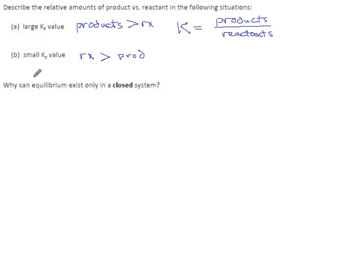Why can equilibrium exist only in a closed system? Well, if you don't have a closed system or an isolated system, it means that chemical species can leave your system. It's like a container with no lid where gases can float out of it.